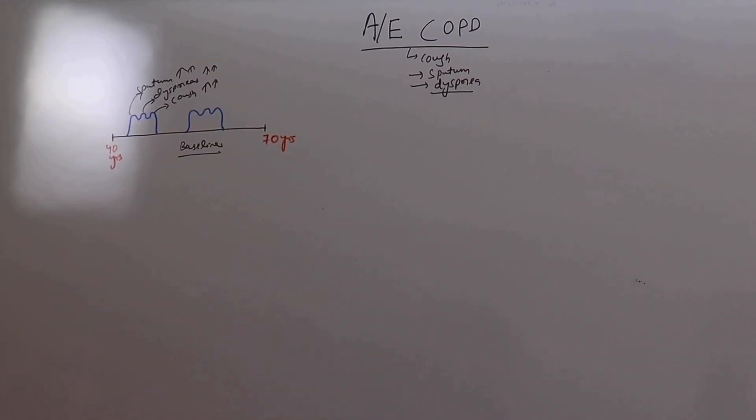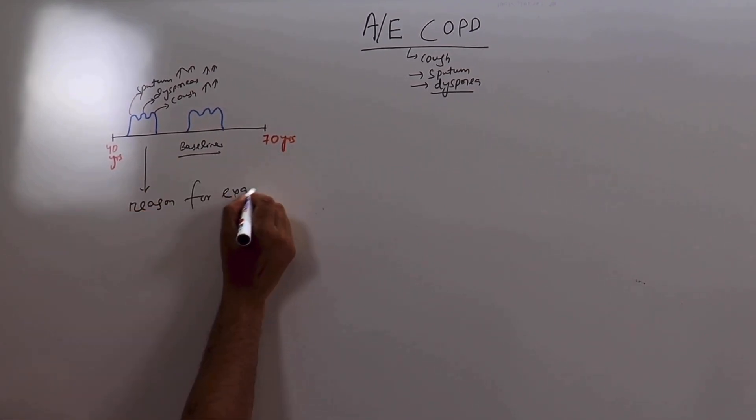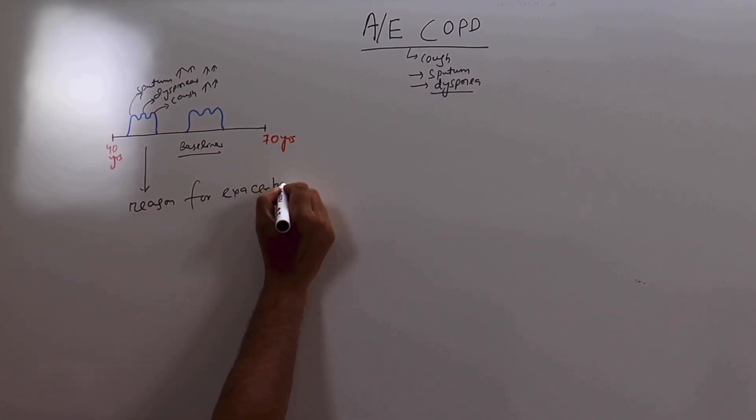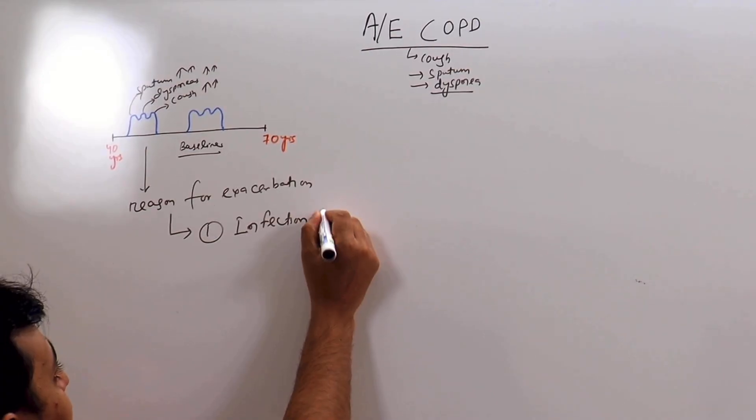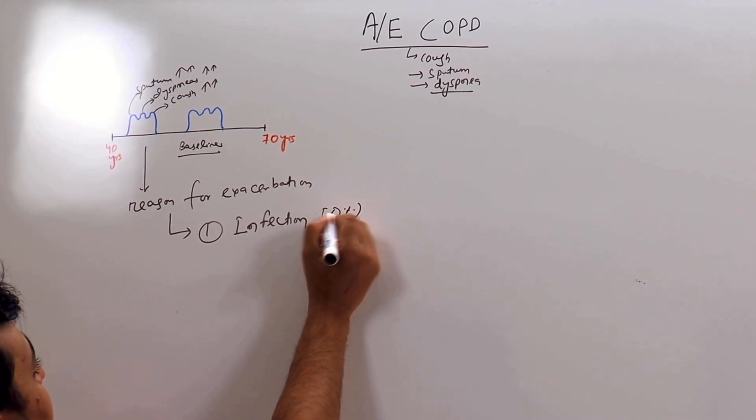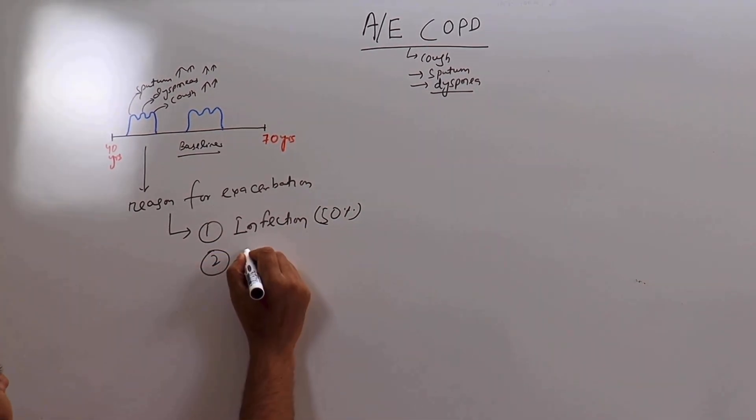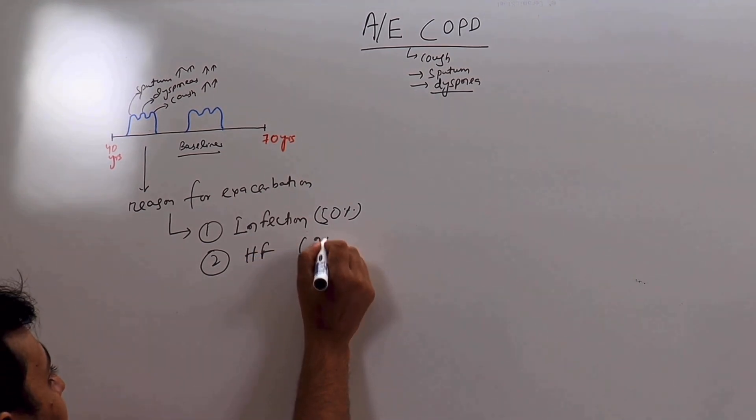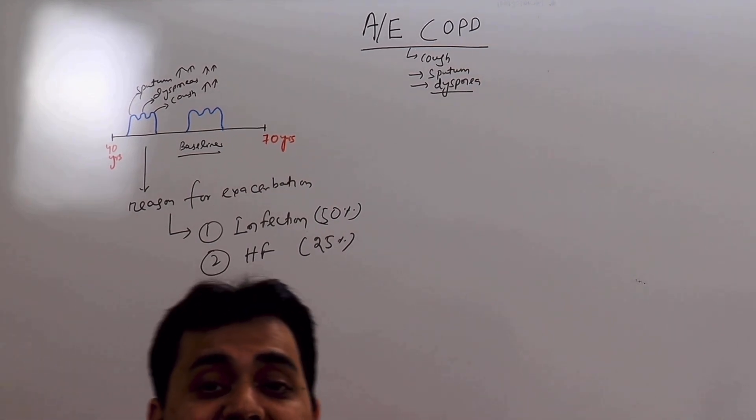Now why does this happen? What is the reason for exacerbation? The most common reason for exacerbation is infection - 50% a reason why this patient is going to exacerbation. Second is heart failure, that is 25%. In 25% the reason remains unknown.